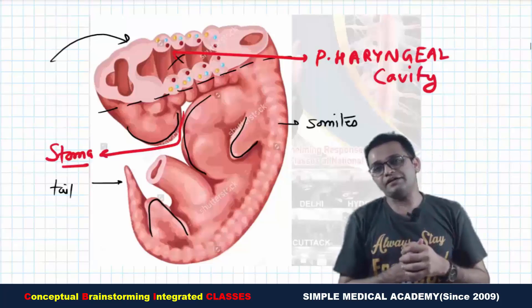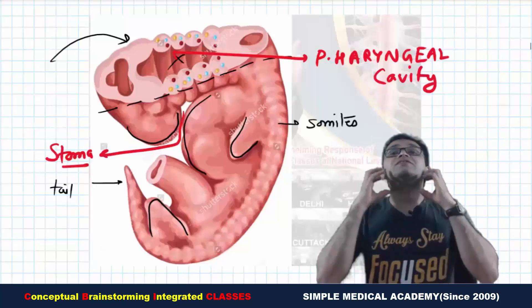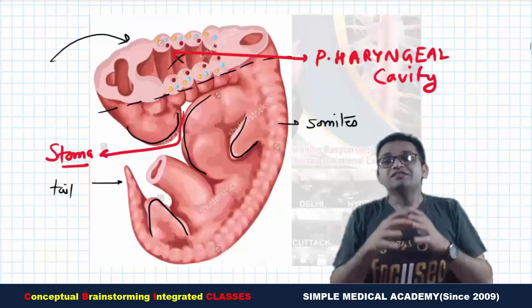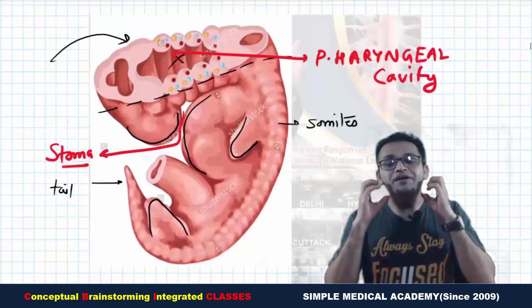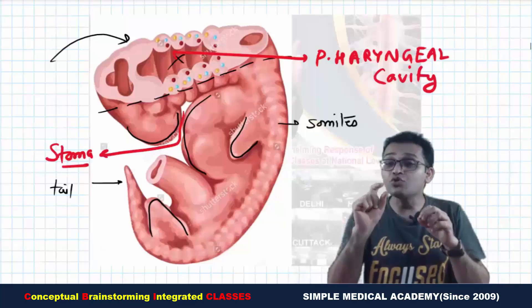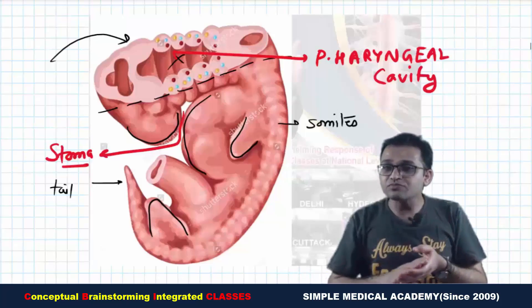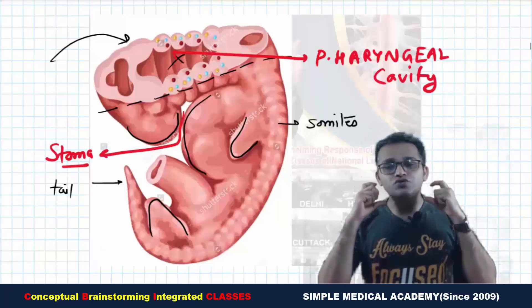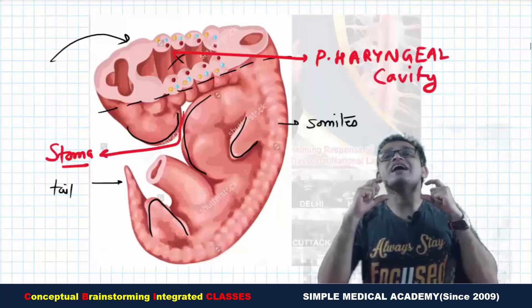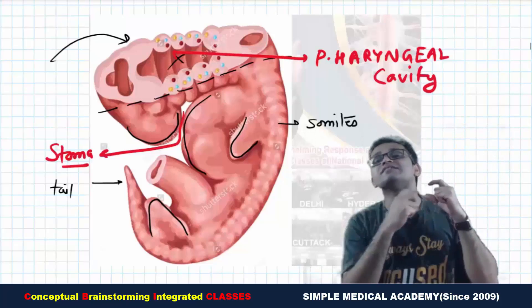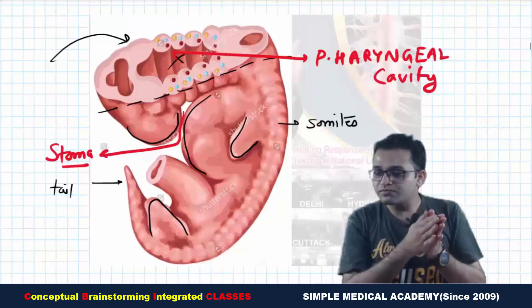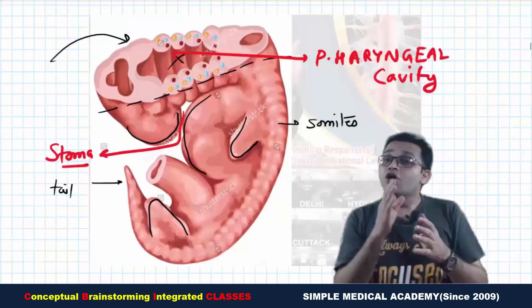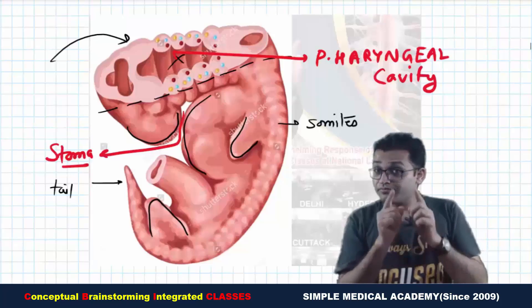What is happening in the embryo is that the mesoderm proliferates rapidly. The mesoderm is growing in between the ectoderm and endoderm, but growing as horizontal thickenings. There are six horizontal thickenings formed near the pharynx region, and these six horizontal thickenings run as arch-like structures near the pharynx.